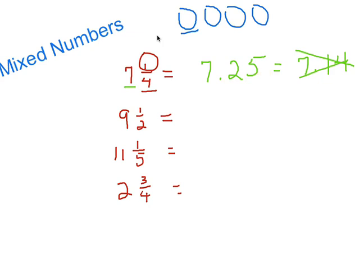What about nine and a half? If you have half of a dollar, that would be 50 cents. So nine and a half equals 9.5, or 9.50.